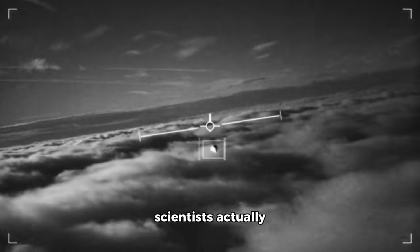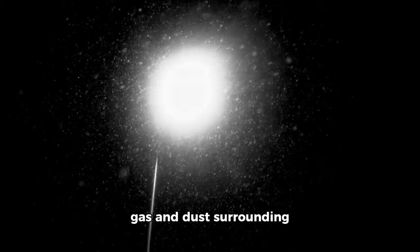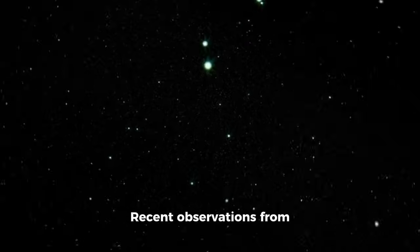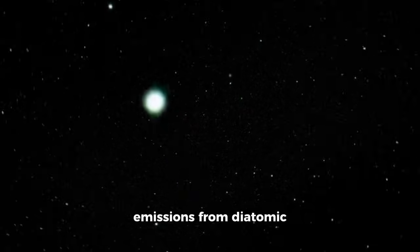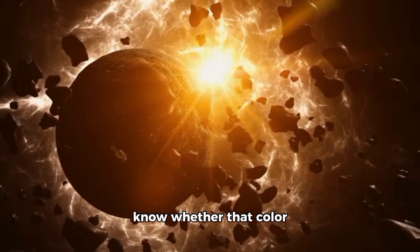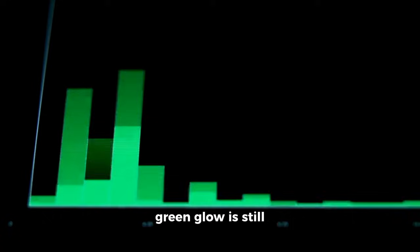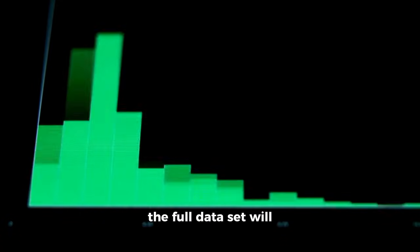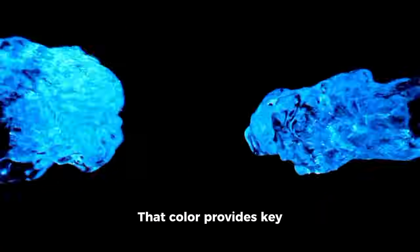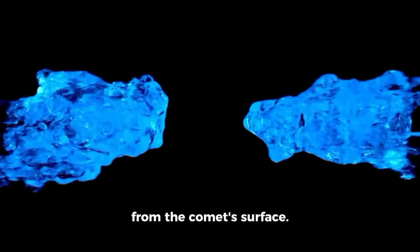So, what did scientists actually observe during this closest approach window? First, the coma structure, the cloud of gas and dust surrounding the comet's nucleus. Recent observations from Gemini North on November 26th had shown the comet glowing green due to emissions from diatomic carbon. Scientists wanted to know whether that color persisted or changed. Early reports suggest the green glow is still present, though analyzing the full data set will take days or even weeks. That color provides key clues about which molecules are actively sublimating from the comet's surface.